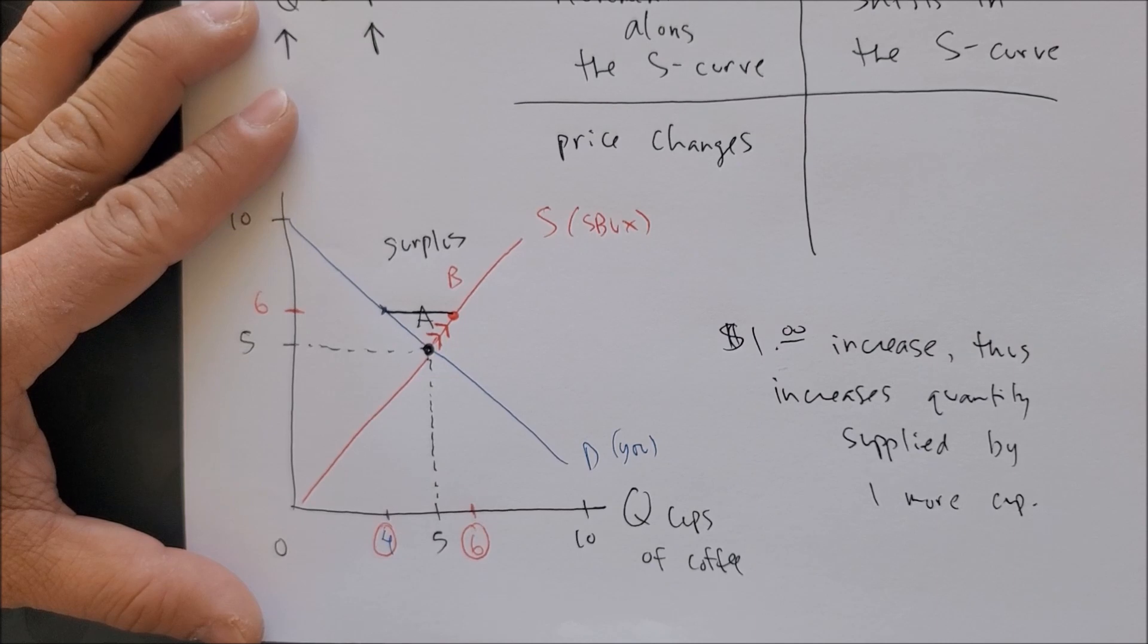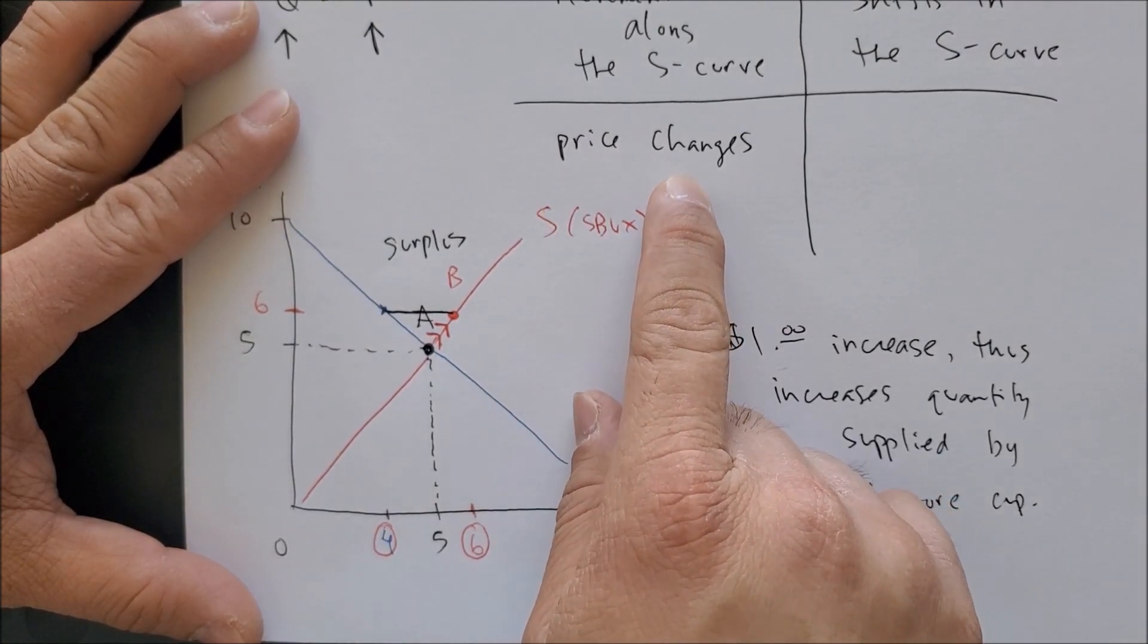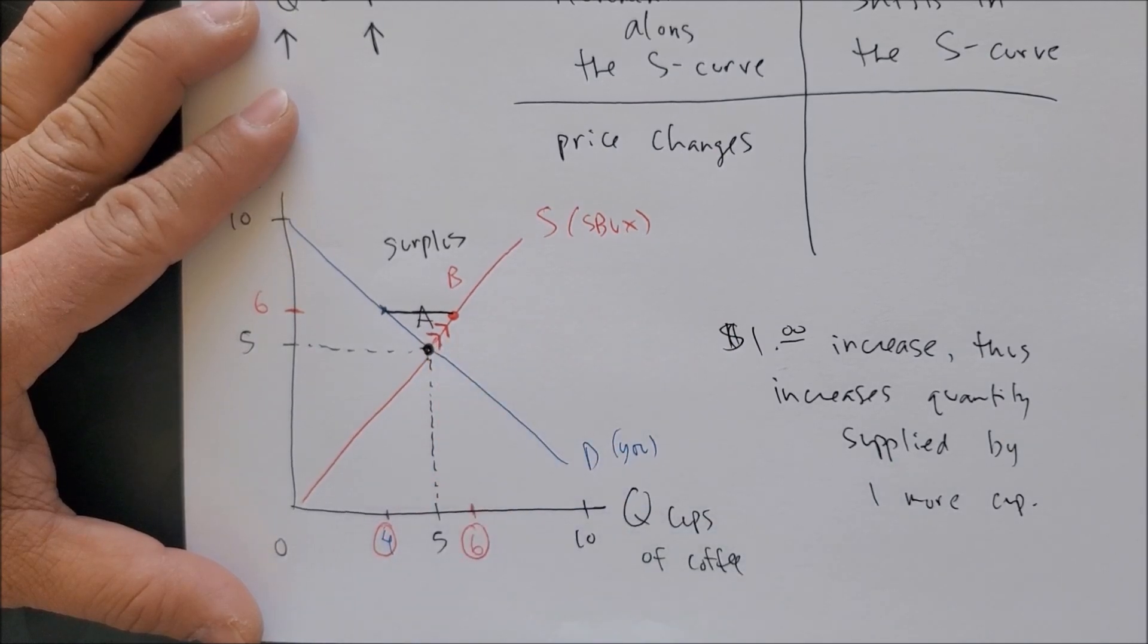This is one factor - the only factor, price change - that would cause a movement along the supply curve.